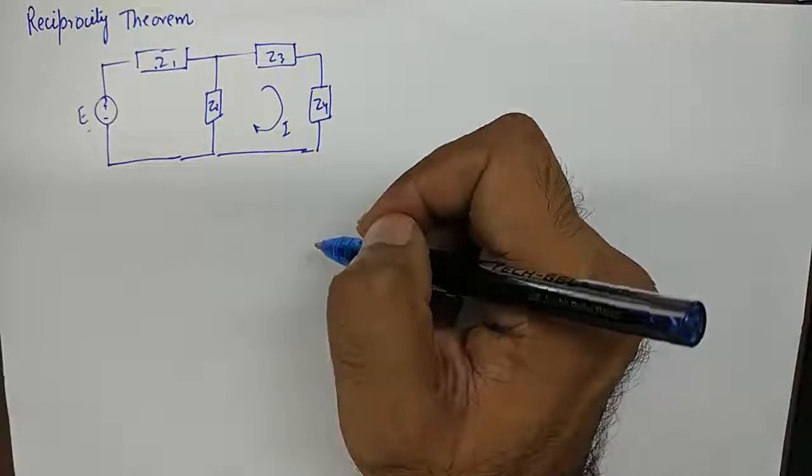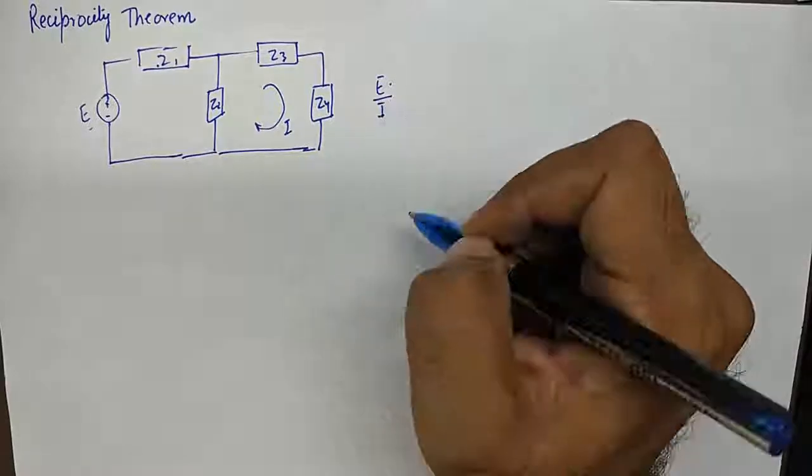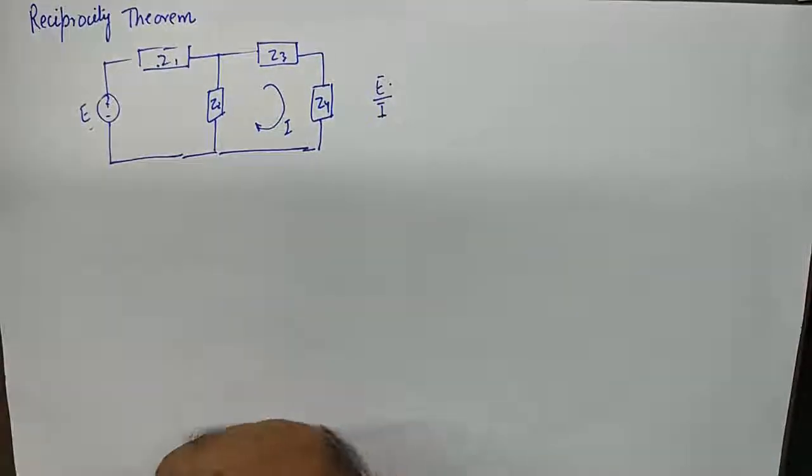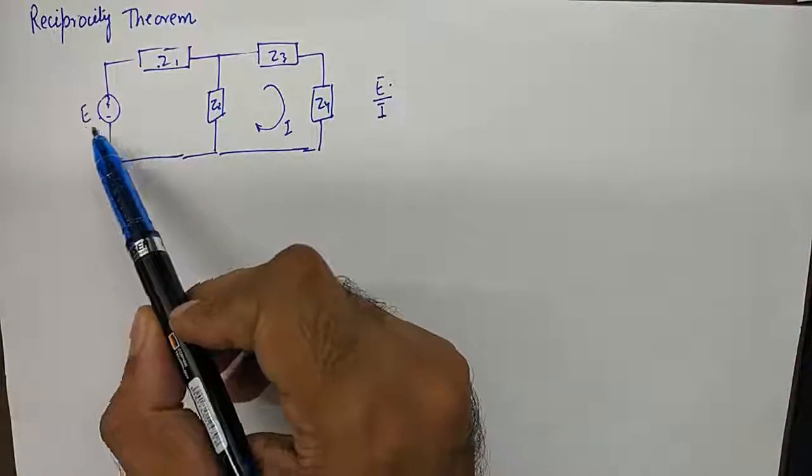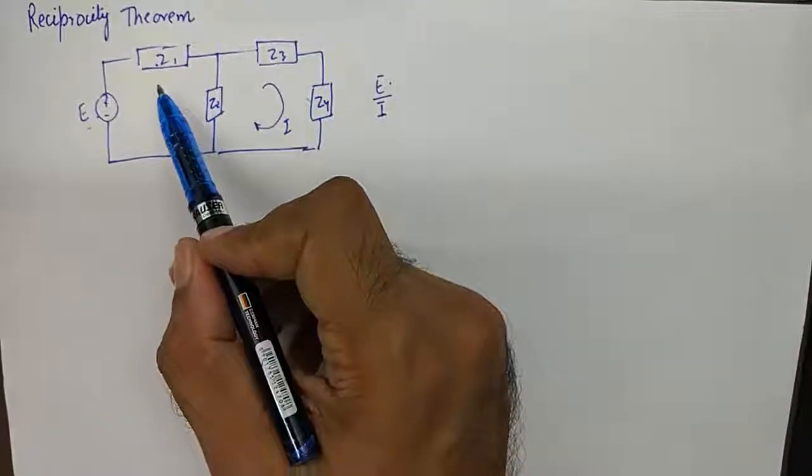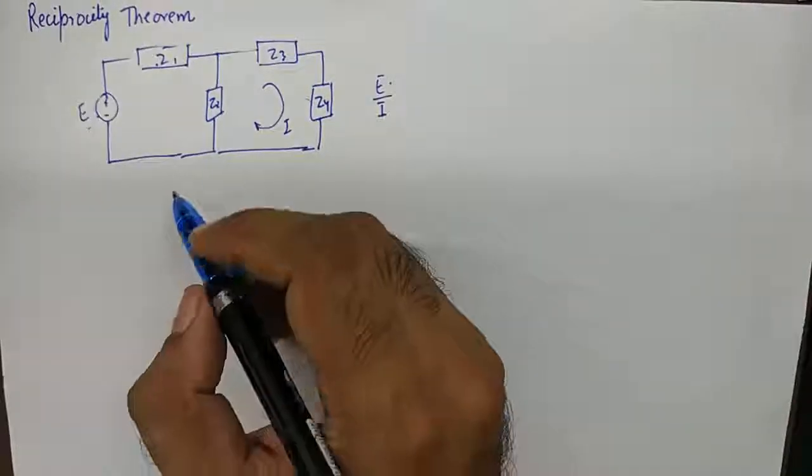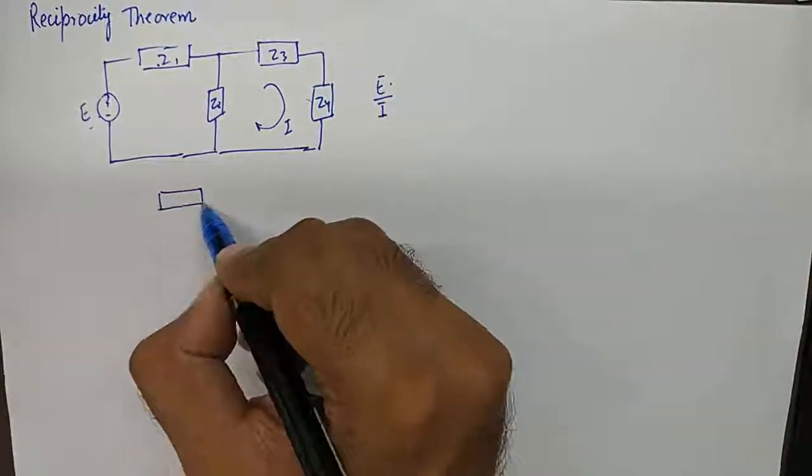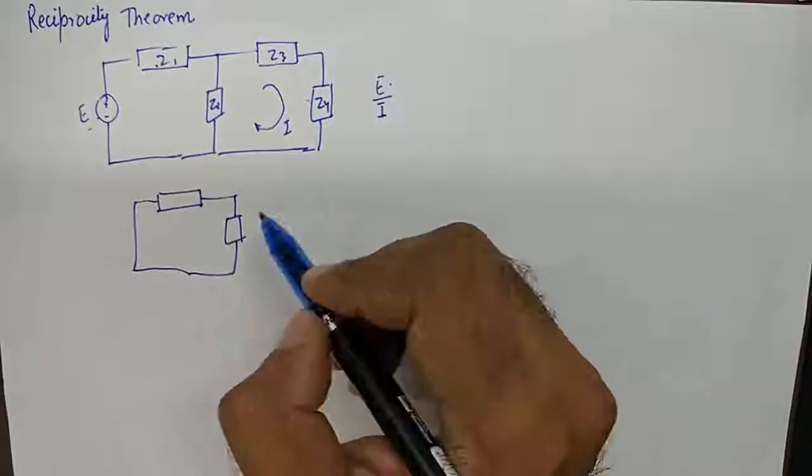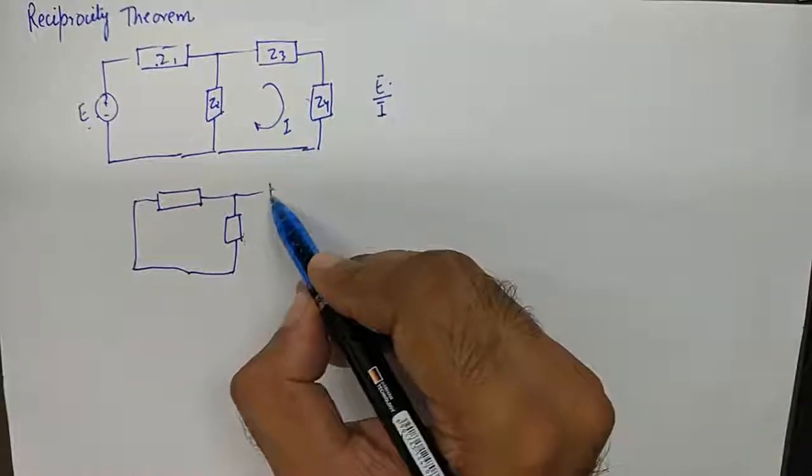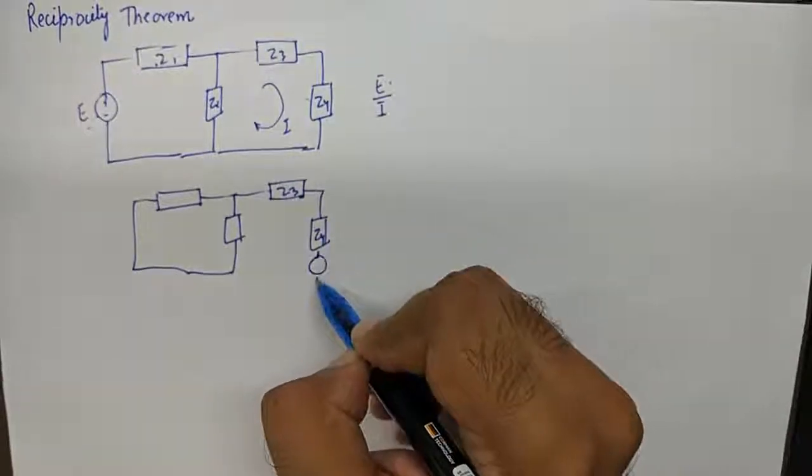Now, the Reciprocity Theorem says that the ratio of E upon I would remain the same if you would change the location of this E into the second loop and you would calculate the current in the first loop. So in other words, if we were to redraw this network to calculate Reciprocity, we will simply move this voltage source over here.